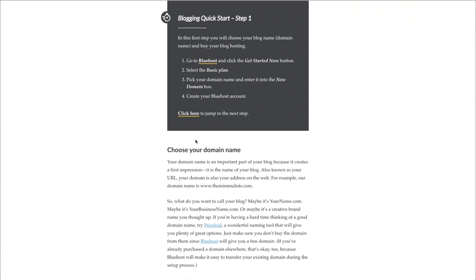Step one: we need to pick our hosting company. The hosting company I've been using for many years is a company called Bluehost. I'll walk you through the sign-up process — they make everything really easy and have great customer support. During this first step, this is also when we're going to pick the name of our blog. For example, my blog is TheMinimalists.com, and you'll be able to pick your URL as well.